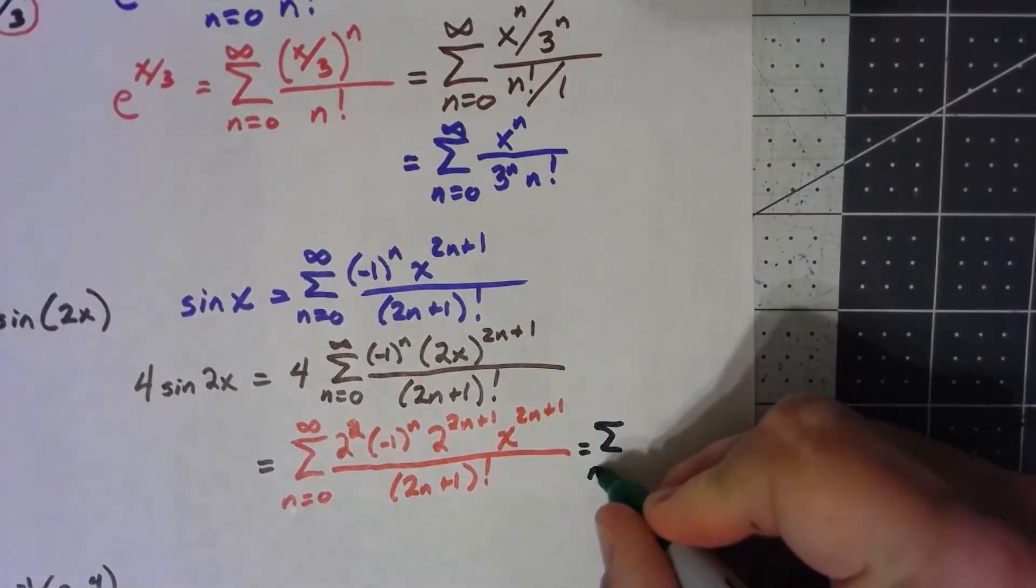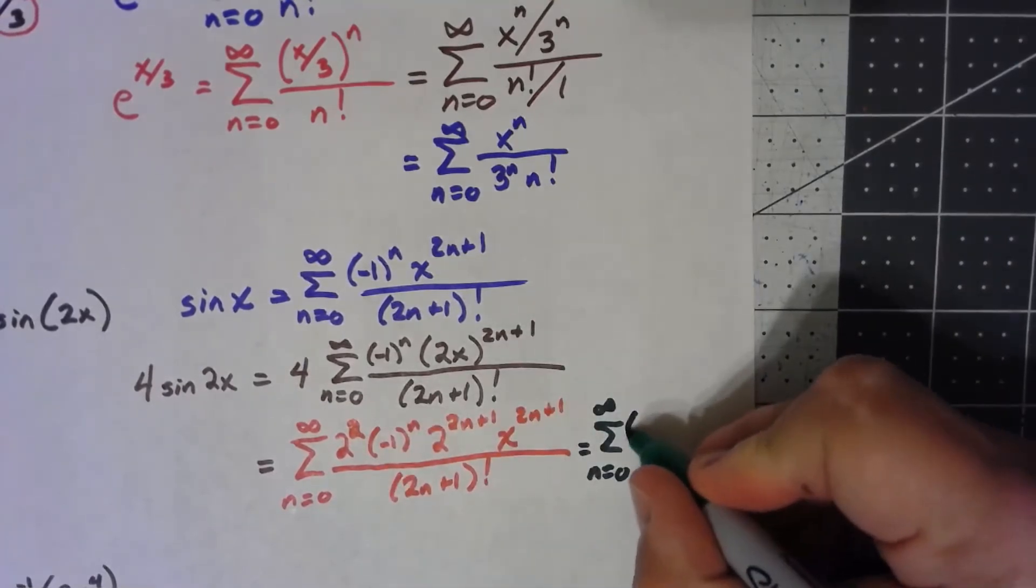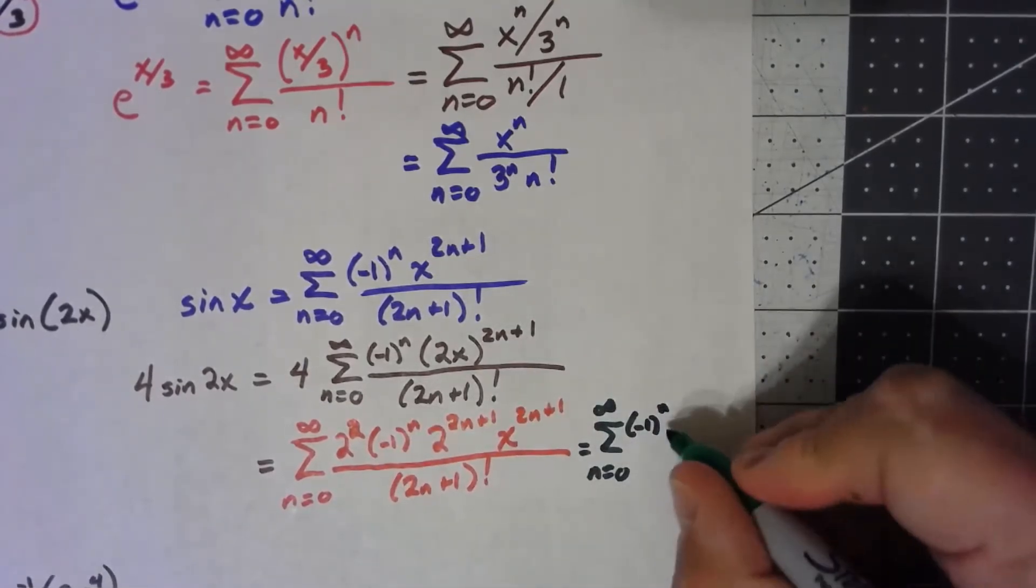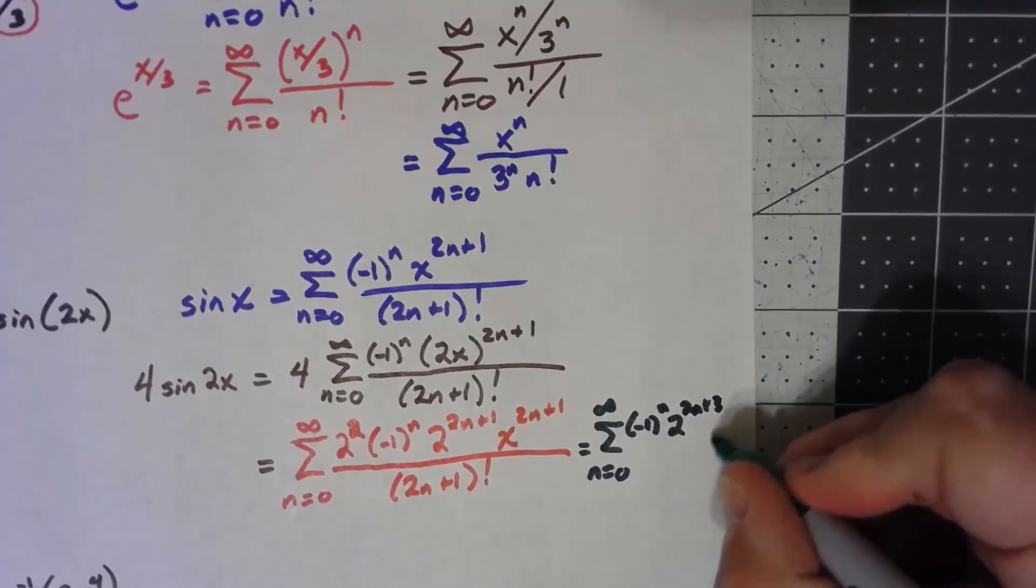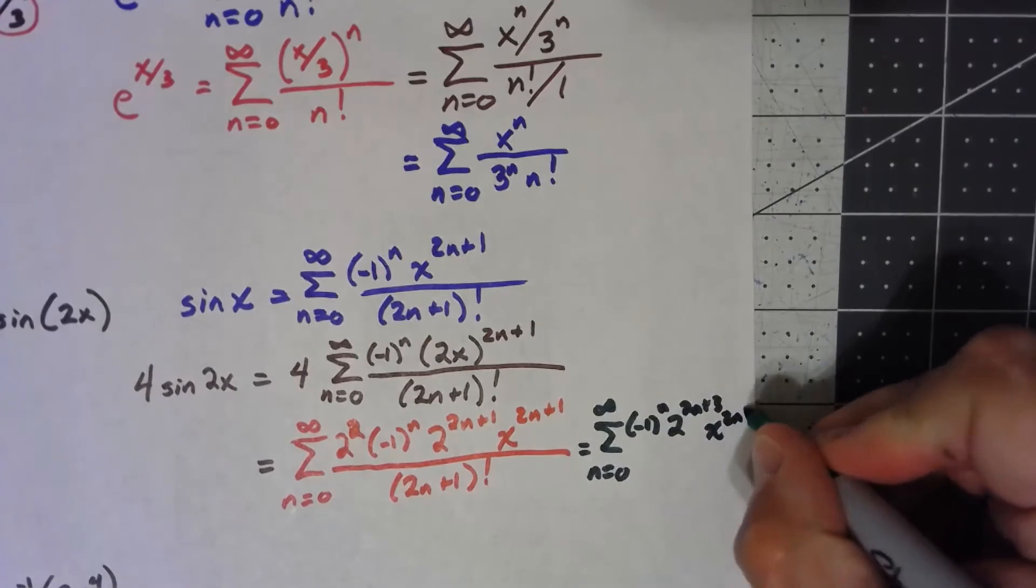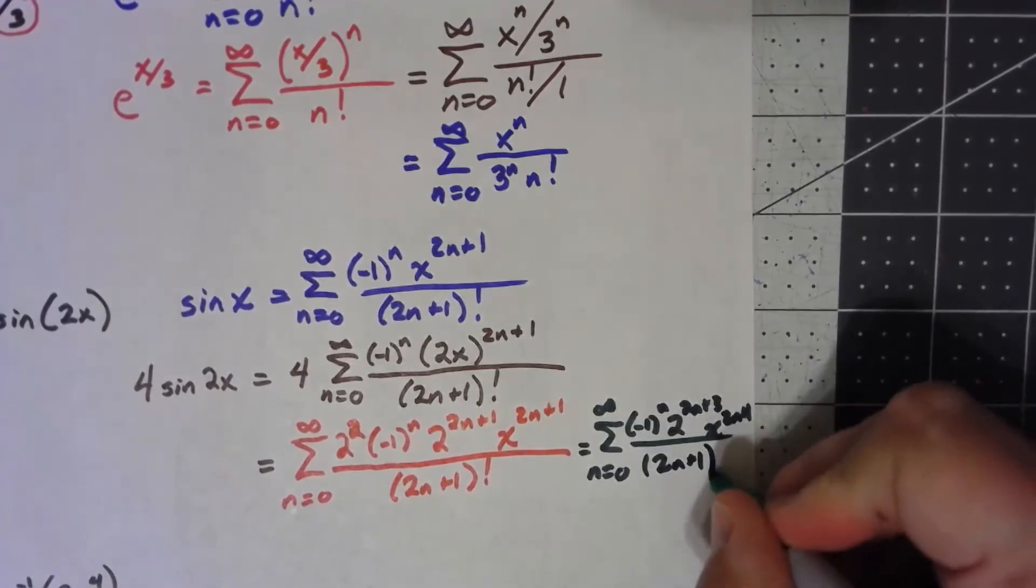So I've got the sum from n equals 0 to infinity. I'll have negative 1 to the n. I'll have 2 to the 2n plus 3 x to the 2n plus 1 over 2n plus 1 factorial.